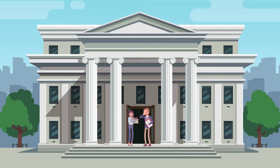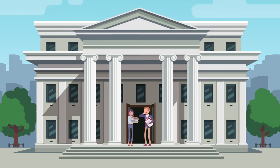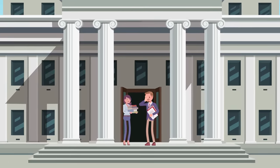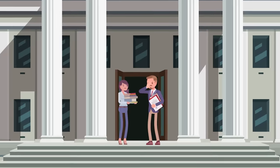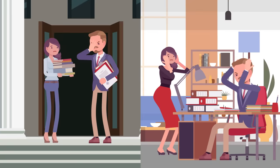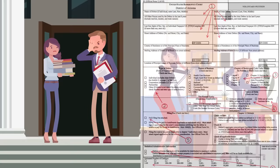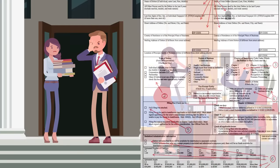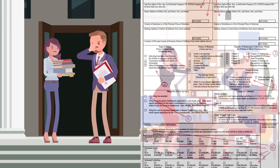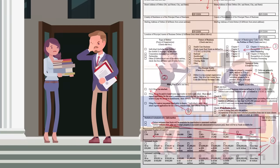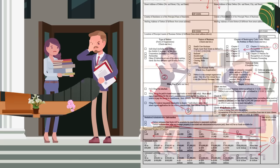Bankruptcy is a legal proceeding where an individual, spouses together, or a business makes a formal request to a federal court declaring that they are unable to repay outstanding debts. Each type of bankruptcy requires different forms and procedures. For Chapter 7 bankruptcy, the debtor petitions the court that they are unable to pay their debts. So let's walk through how a Chapter 7 bankruptcy could proceed.